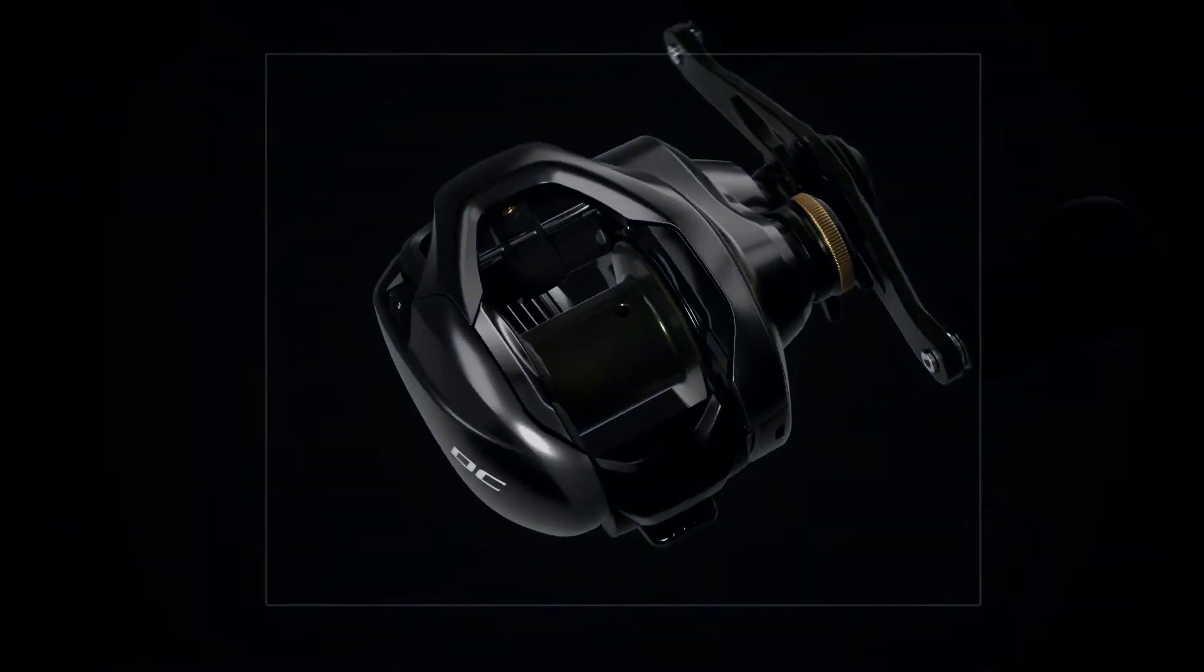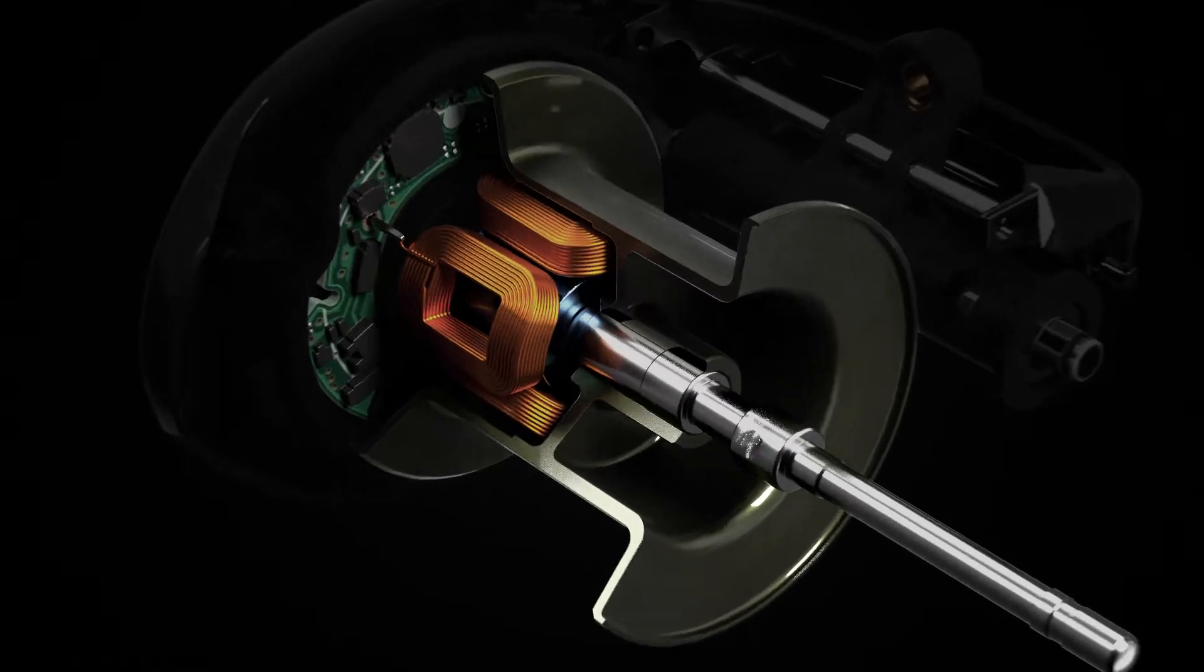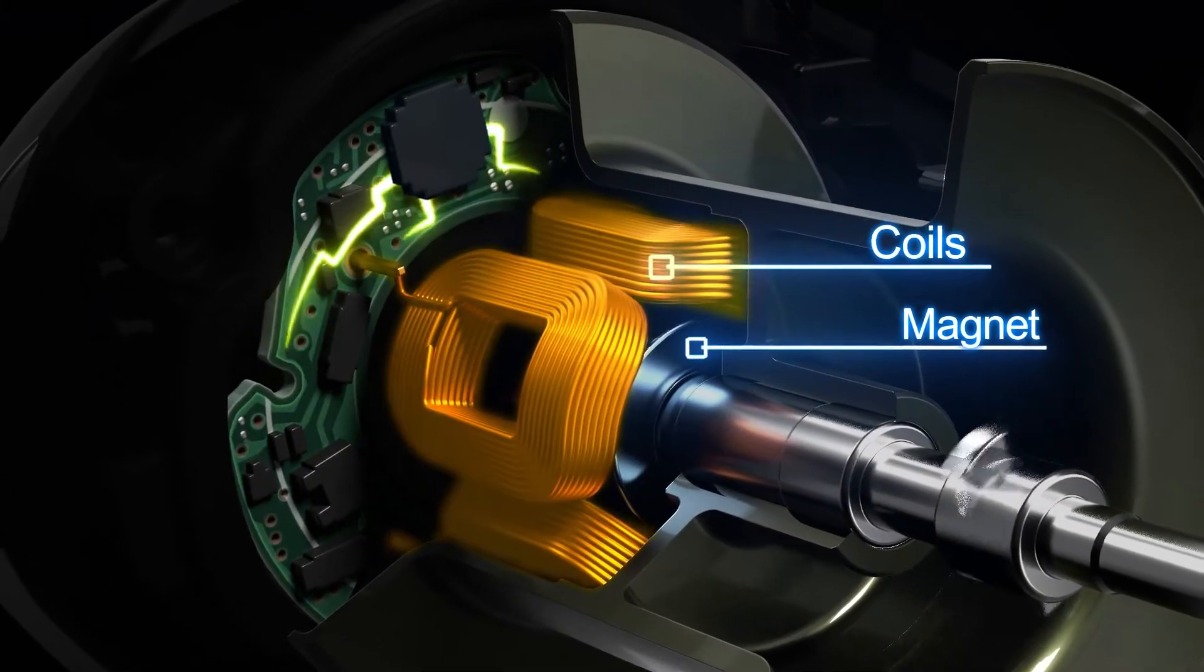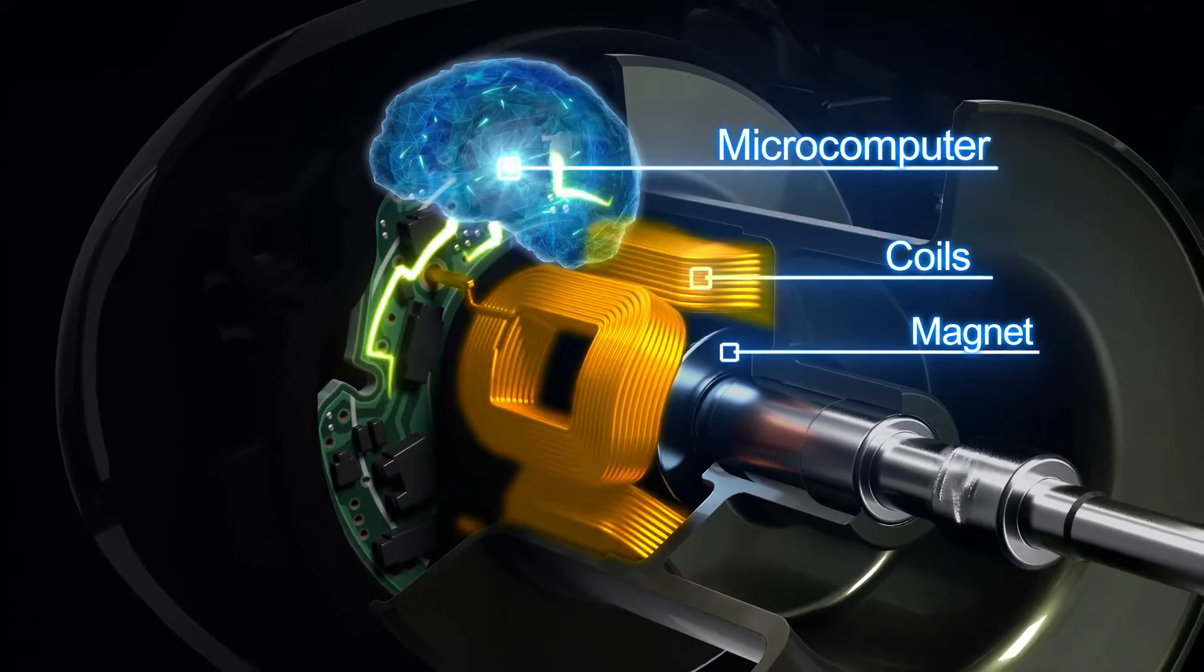Let's see the mechanism of DC Brake. When the spool starts to revolve, an electric current is generated through the coil. The intelligent microcomputer constantly measures spool speed and controls it to prevent backlash.